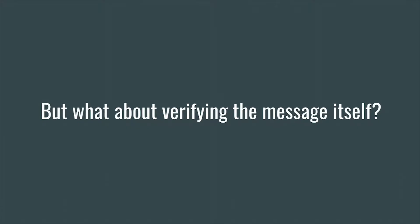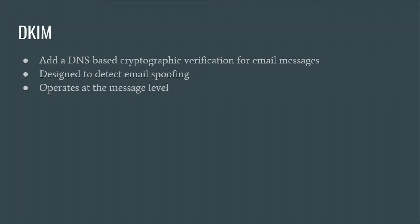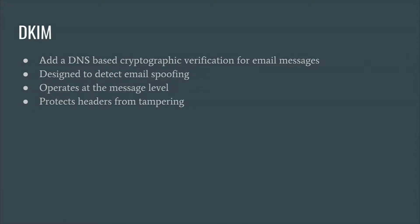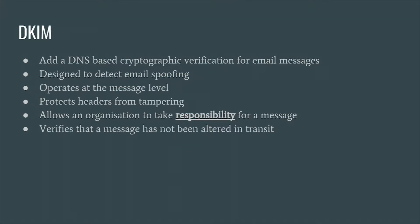But what about verifying the message itself? That is where DKIM comes in. DKIM adds a DNS-based cryptographic verification for emails, and it's designed to prevent and detect email spoofing. It does this by operating at message level — protecting the headers of the message, such as subject, from, reply-to, and any other headers, from being tampered with in transit. This allows an organization sending the message to take responsibility for that message, because it's digitally signed. You can verify that the message has not been altered in transit, and no one else but you could have sent that message because you signed it with your private key.